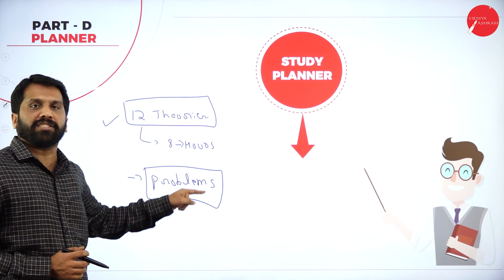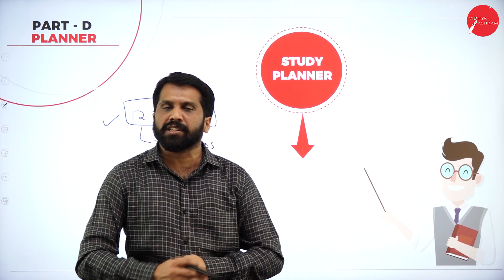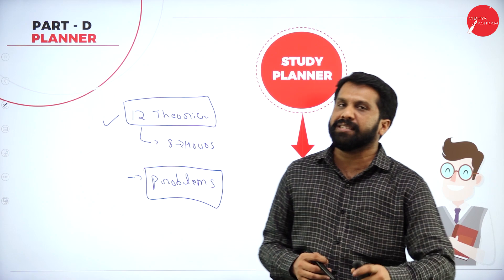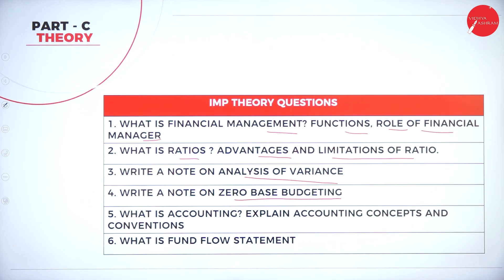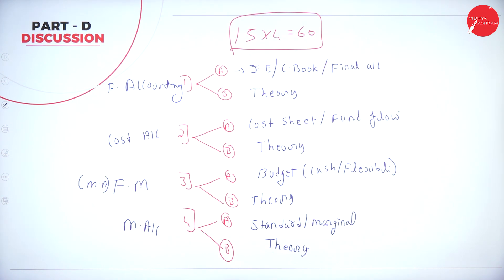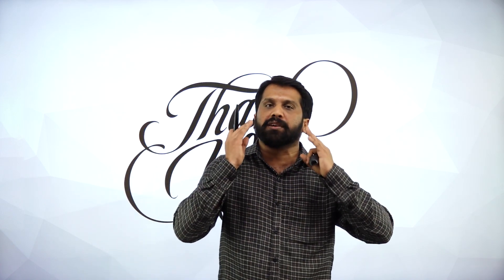Spend 8 hours for theory and the rest for problems. If you cannot give 8 hours together, give 4 hours today and 4 hours tomorrow. I will go back to all the slides now — please take screenshots. These are the topics, the blueprint, theories 1 to 6 and 7 to 12, the question paper pattern, and the study planner. Instead of watching all the video classes here, work out one problem from each topic.